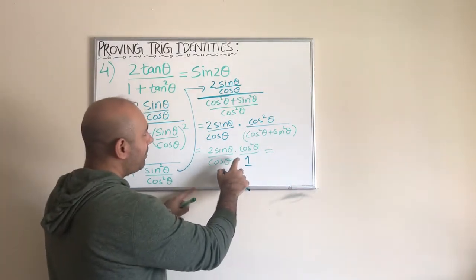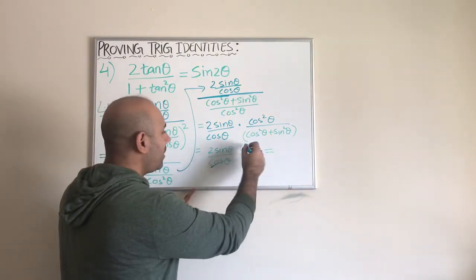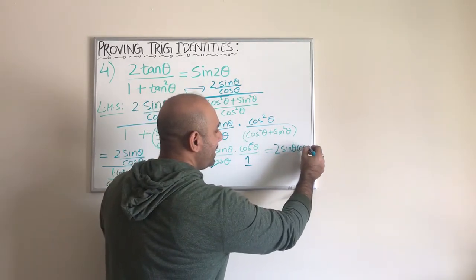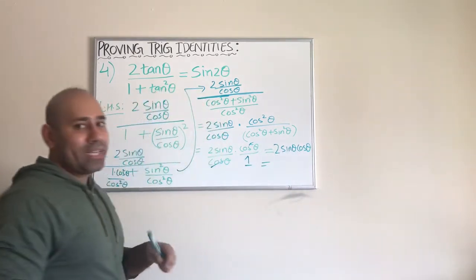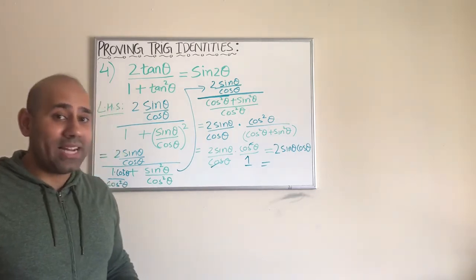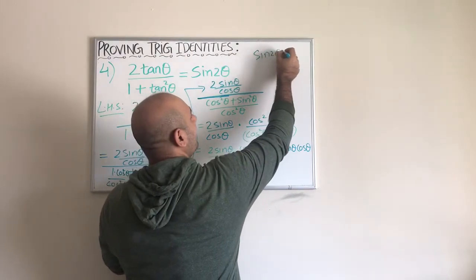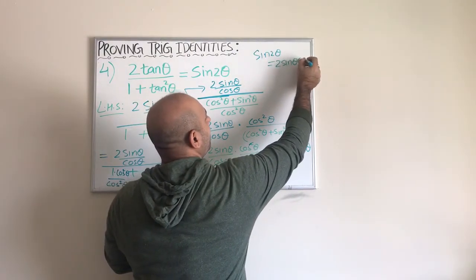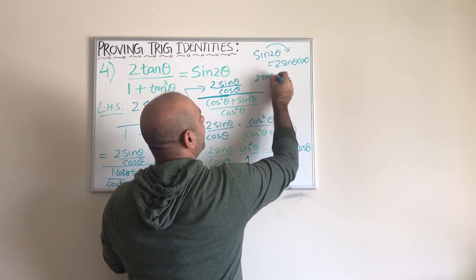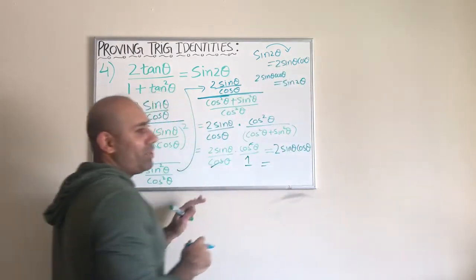Now let's simplify further. We have cosine squared in the numerator and cosine in the denominator, so one of the cosines cancels out. We are left with two sine theta times cosine theta. But two sine theta cosine theta is exactly what the double angle identity gives us — the very first double angle identity states that sine of two theta equals two sine theta cosine theta.